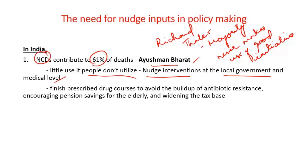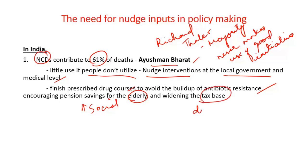This nudge-based persuasion should encourage patients to complete drug courses, as incompletion of drug courses leads to the buildup of antibiotic resistance. Social persuasion also has a place in improving social security — for example, by encouraging the elderly to plan for their post-retirement life. Tax is important for a country's development, and social persuasion can also be used to widen the tax base.